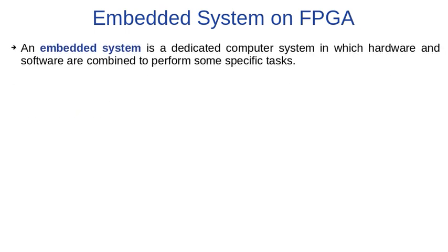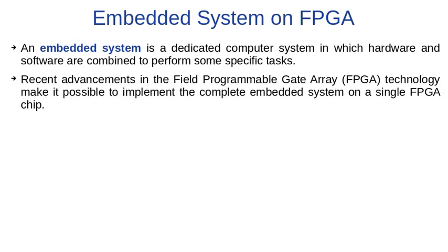Embedded system on FPGA. From the definition, an embedded system is a dedicated computer system in which hardware and software are combined to perform some specific tasks. With recent advancements in field programmable gate array technology, it is possible to implement a complete embedded system on a single FPGA chip.